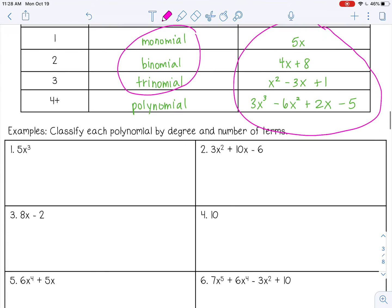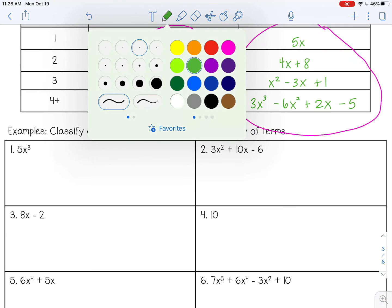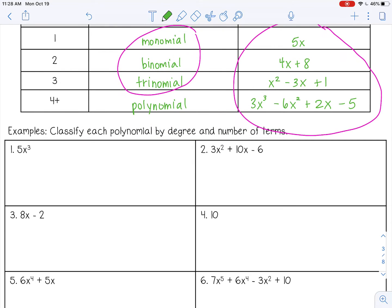Okay, so classify each polynomial by degree and number of terms. So let's do degree first. Remember, degree is the highest exponent. So this has a highest degree of three, which means it's cubic. And then it has one term, so it's a monomial.